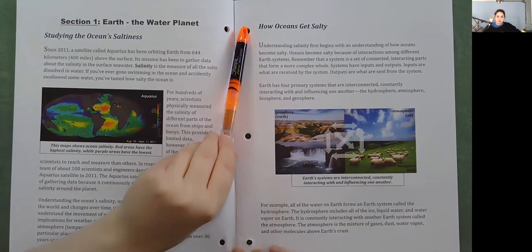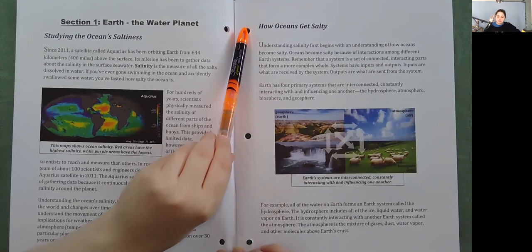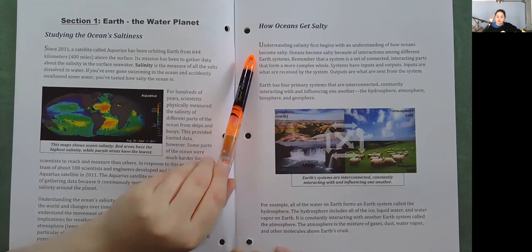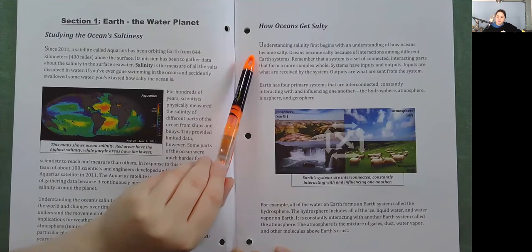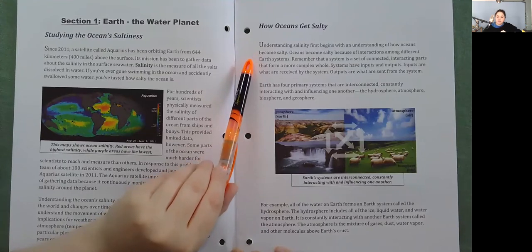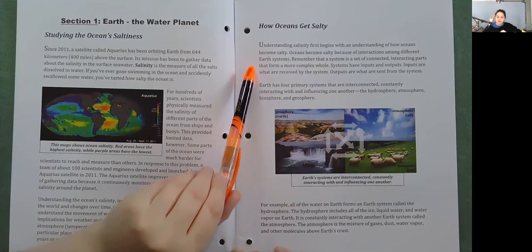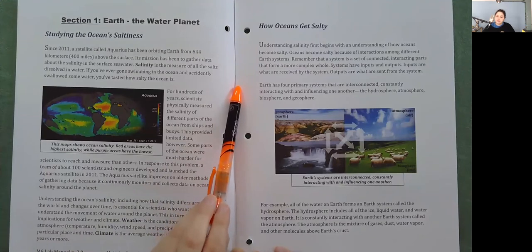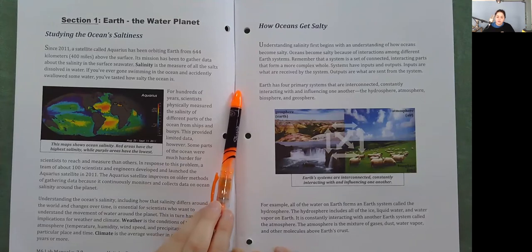How oceans get salty. Understanding salinity first begins with an understanding of how oceans become salty. Oceans become salty because of interactions among different Earth systems. Remember that a system is a set of connected, interacting parts that form a more complex whole. Systems have inputs and outputs. Earth has four primary systems that are interconnected: the hydrosphere, atmosphere, biosphere, and geosphere.